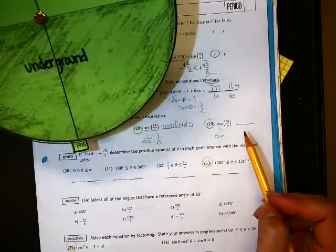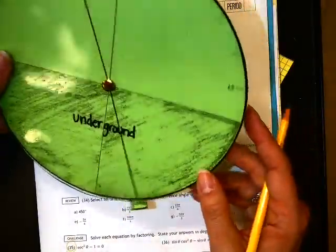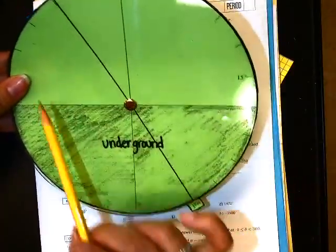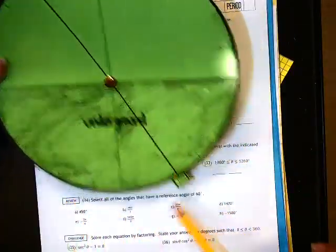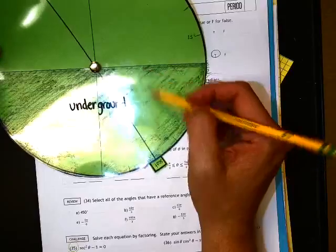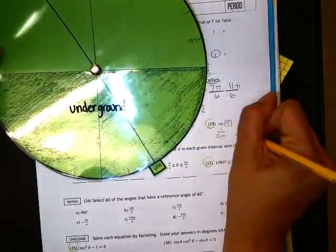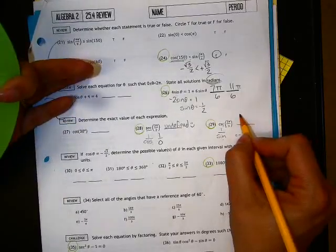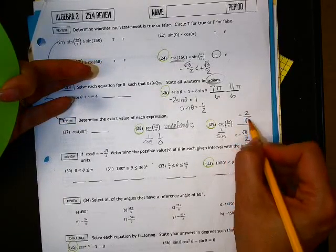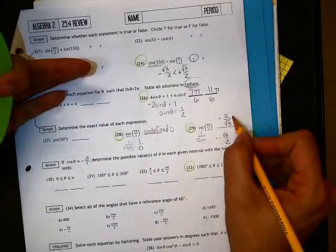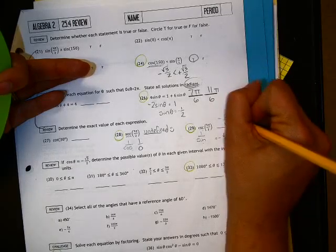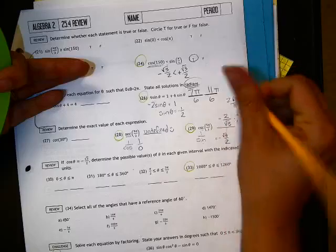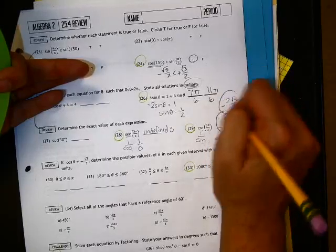Sine of 5π over 3, which will be here, right? So we've got 1, 2, 3, 4, 5π over 3. And sine of that is negative root 3 over 2. And so we just need to flip it. Now, you can rationalize the denominator there, which gives you 2 root 3 over 3, or you can leave it that way. It's kind of up to your teacher what it is that they want you to do.